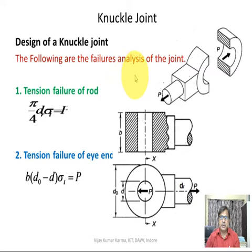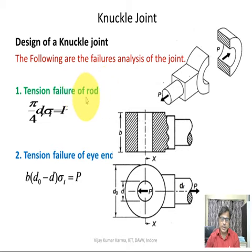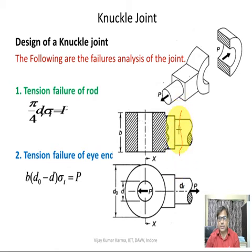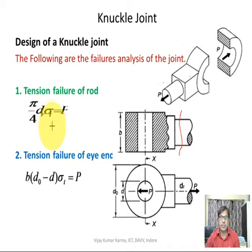The following are the failure modes of the joint. First is tension failure of the rod. The rod fails in tension at its cross-section, with area (π/4)·d_r². So (π/4)·d_r²·σ_t, where d_r is the diameter of the rod, gives the resisting force. This is area multiplied by stress, which equals the applied force in the limiting case.